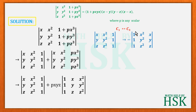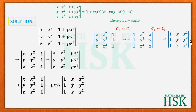Whenever two columns are interchanged, the determinant is multiplied by −1. We then interchange column 2 and column 3, giving (1, x, x²; 1, y, y²; 1, z, z²). The second interchange multiplies by −1 again, so minus times minus gives plus, and we obtain the determinant (1, x, x²; 1, y, y²; 1, z, z²).